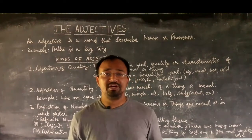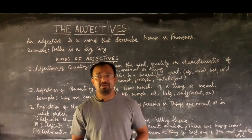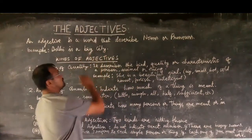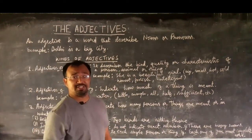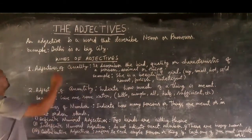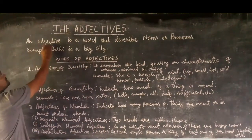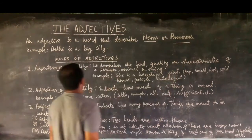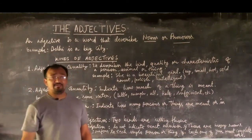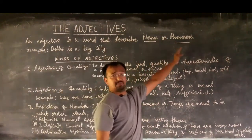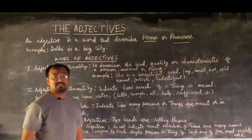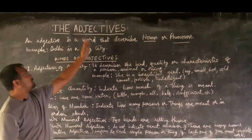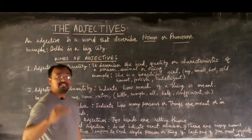Hello children, welcome back to English language class. Today I'm going to teach you the chapter called adjectives. First of all, let me explain what an adjective is. An adjective is a word that describes a noun or pronoun. Earlier in the chapter I have already explained what a noun and pronoun is, so I hope you understood that well. Now focus on the chapter adjectives — it is a describing word.